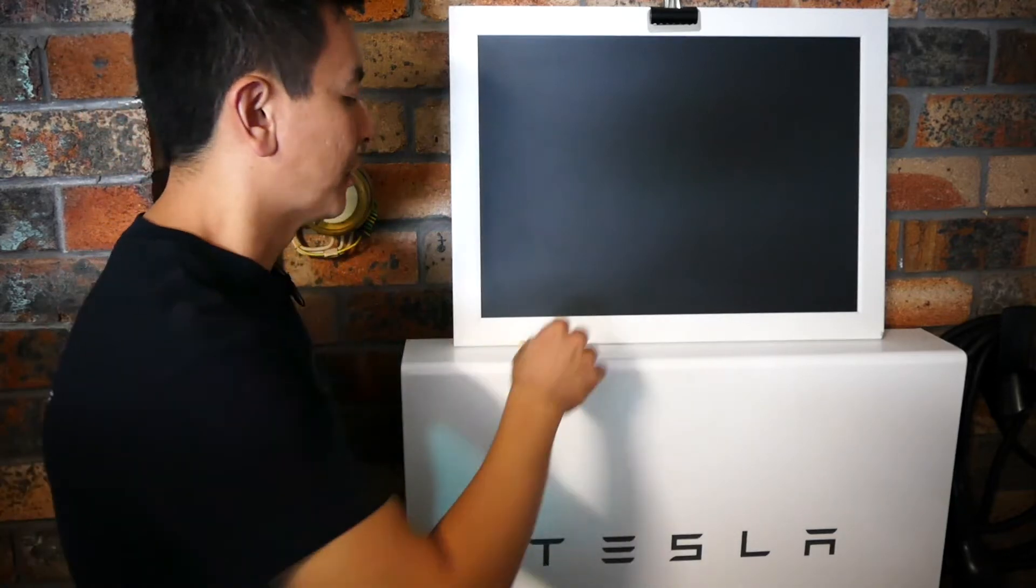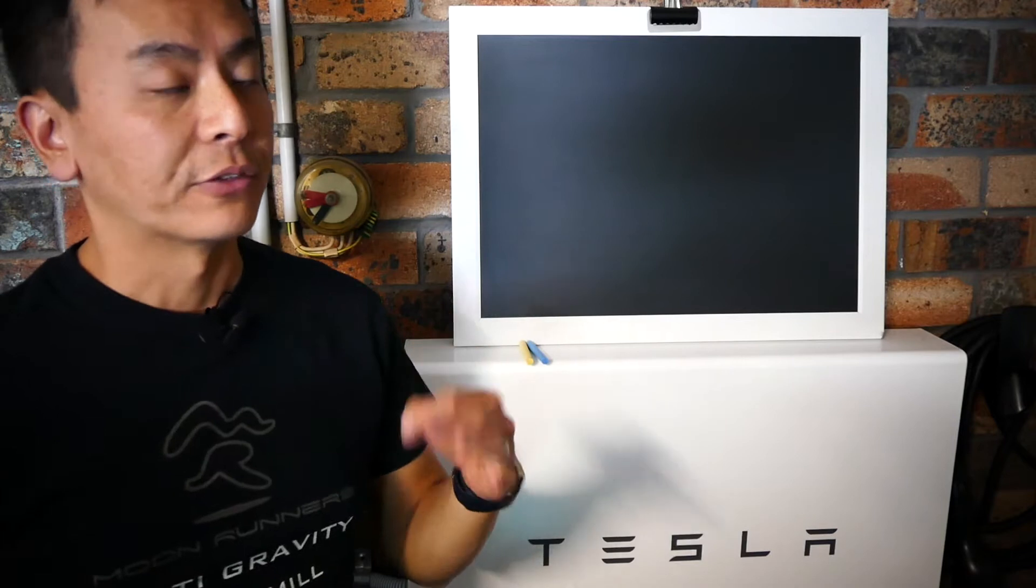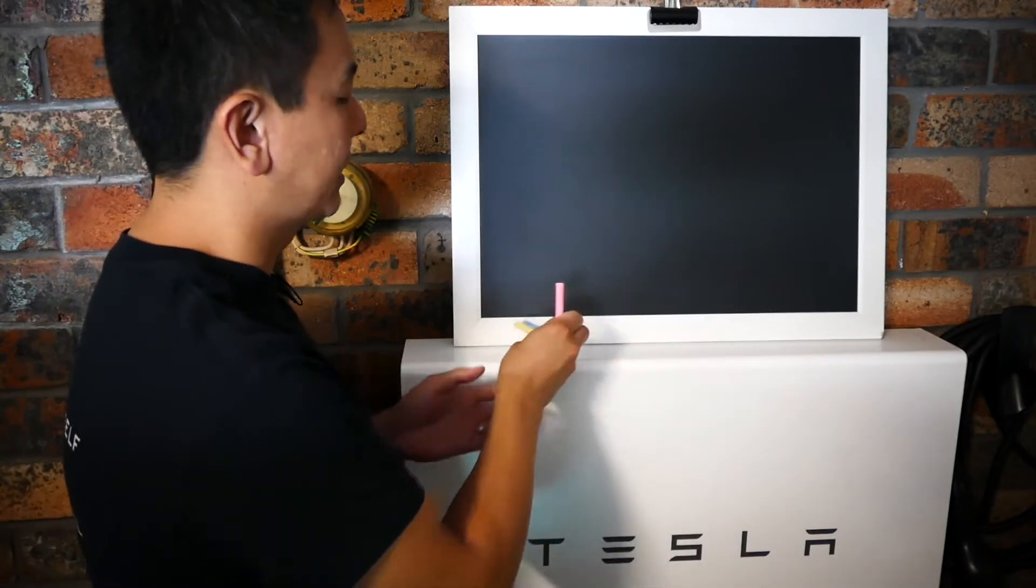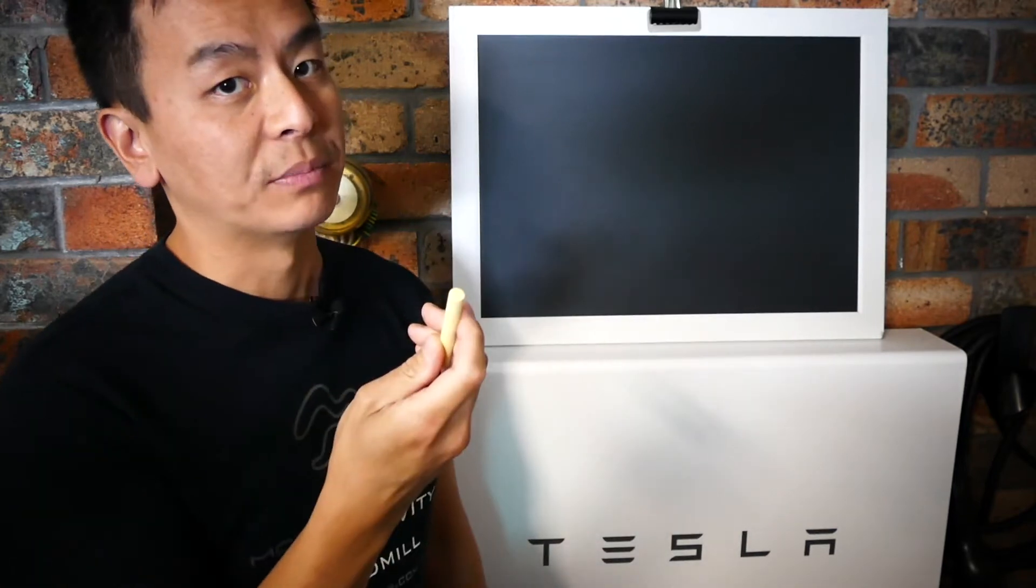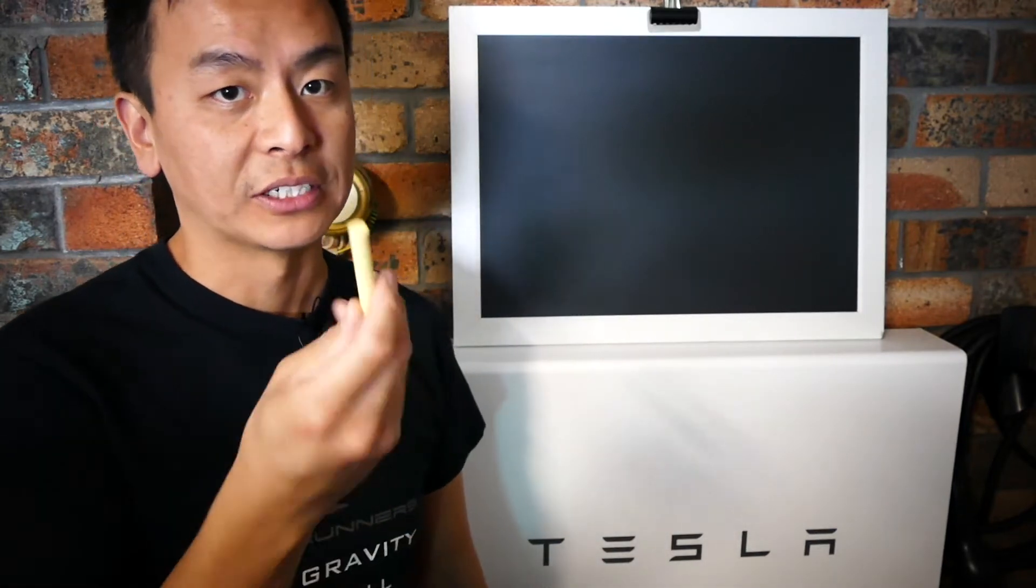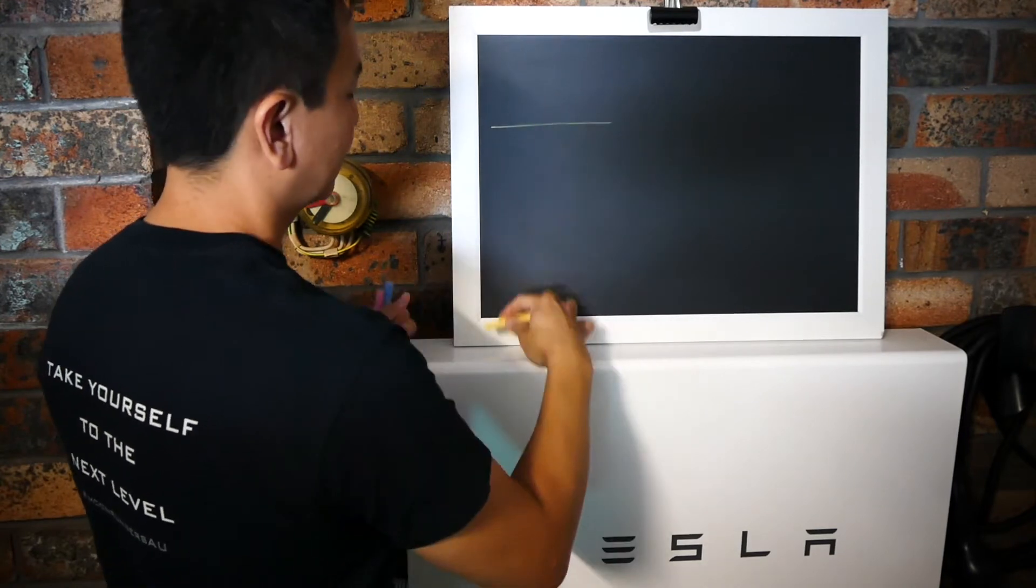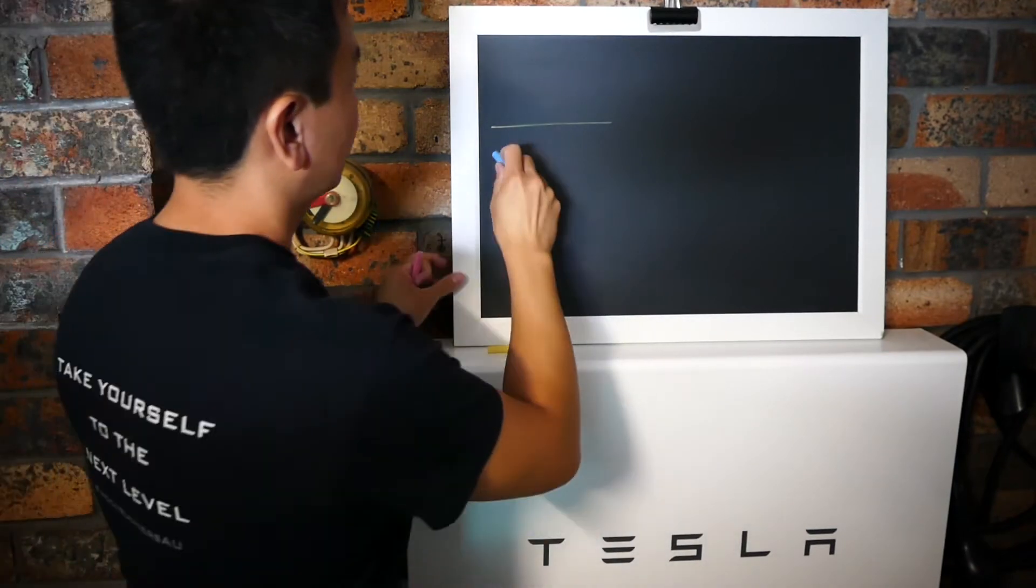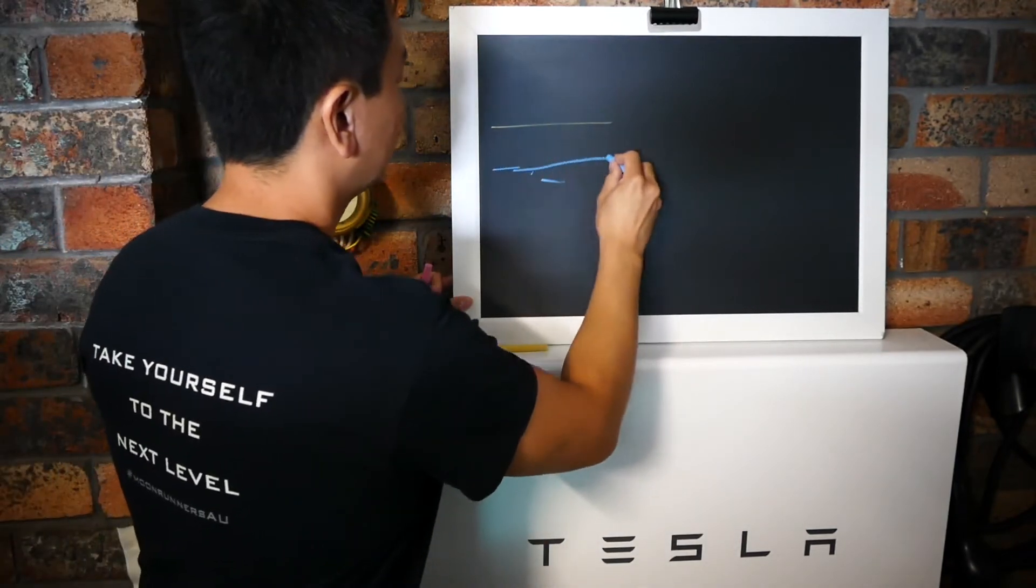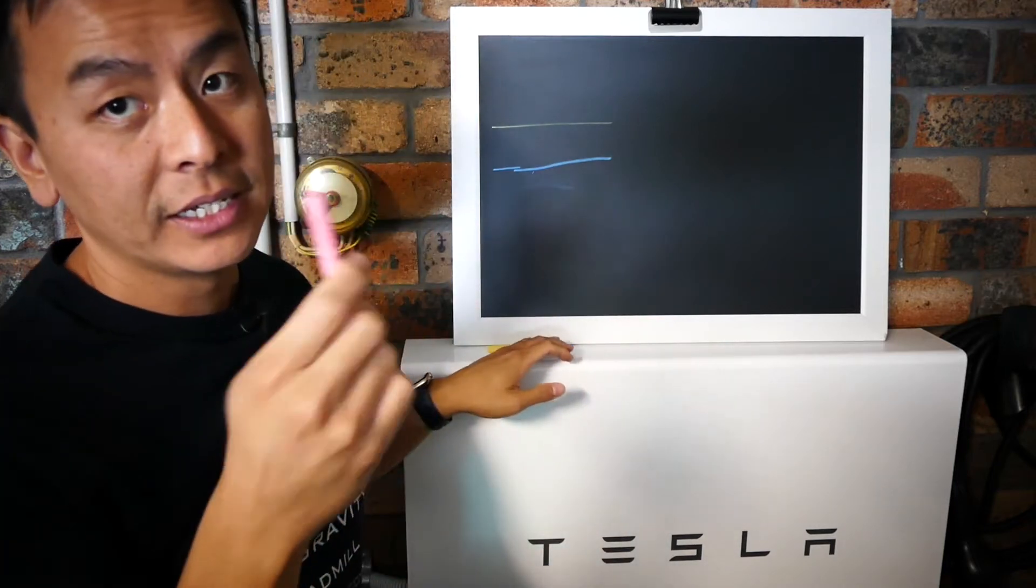Alright, so in a three-phase home your electricity comes into your house from the grid by three phases. For simplicity's sake I'm going to use three colors: yellow, I was going to use white but the kids used up all the white chalk so you're stuck with yellow. So phase one is yellow, phase two is blue, and phase three is red.